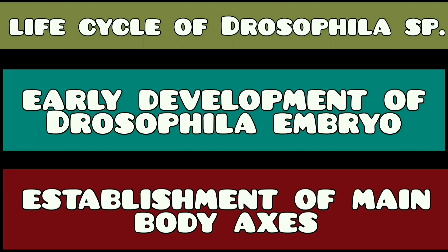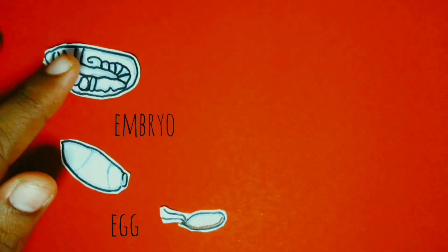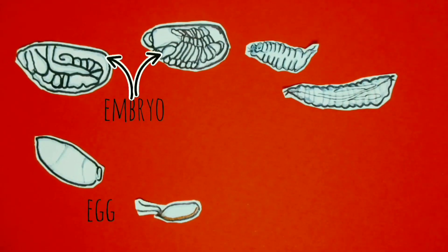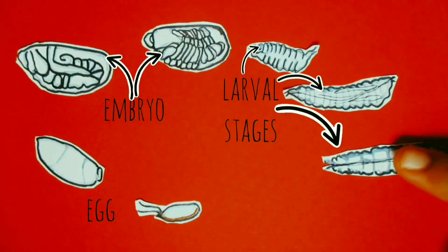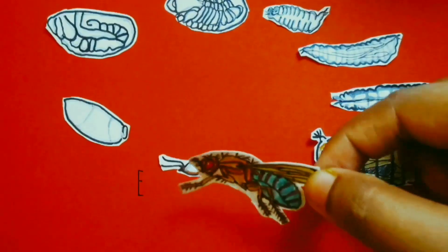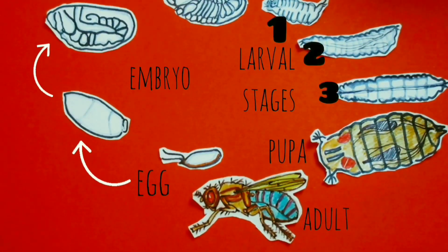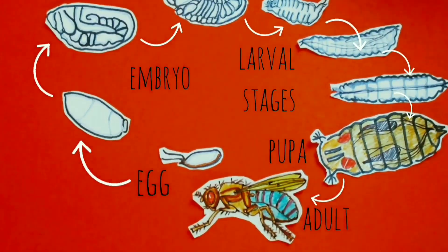Other essential genes such as segmentation genes and homeotic genes will be described thoroughly in upcoming videos. The life cycle of the fruit fly consists of a number of stages: embryogenesis, three larval instars, pre-pupal, pupal, and adult stage. The generation time is roughly 10 days from fertilized egg to adult. A Drosophila egg develops into a hollow cylinder of cells within a few hours, segmentation appears, the embryo develops into a larva that passes through three stages before becoming a pupa, which undergoes metamorphosis, and finally the adult emerges.